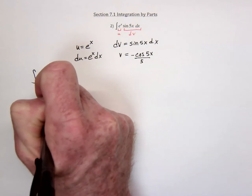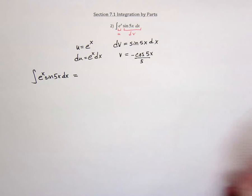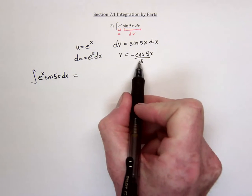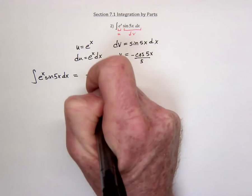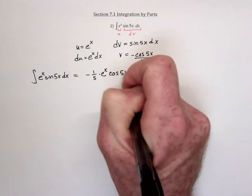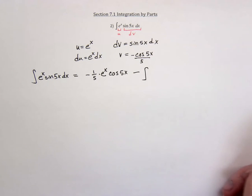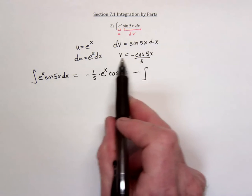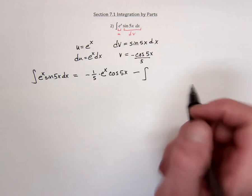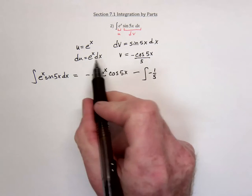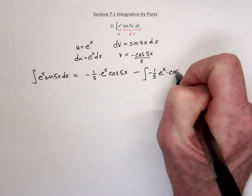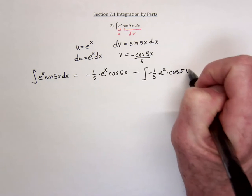We need to build the full equation, so the original problem is: the integral of e to the x sine of 5x dx equals, by integration by parts, the u times v. I'll factor the fraction out in front: negative one-fifth, times e to the x multiplied with cosine of 5x. Then minus the second part of integration by parts, which is v times du. Again with negative one-fifth in front, multiplied to get e to the x times cosine of 5x dx.